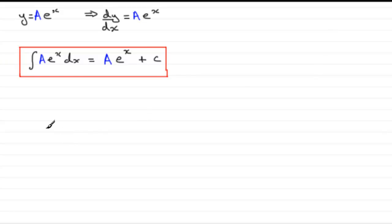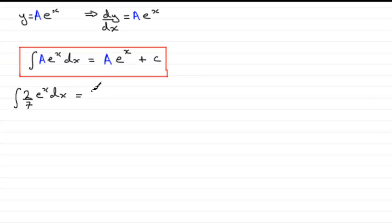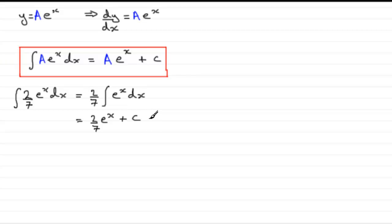Here's an example to try. Suppose we've got the integral of two-sevenths of e to the power x with respect to x. Our constant A is two-sevenths — we can think of this as bringing two-sevenths out the front of the integral. We still have e to the x to integrate with respect to x, so we get two-sevenths e to the power x plus the constant of integration, plus c. That's fairly straightforward.